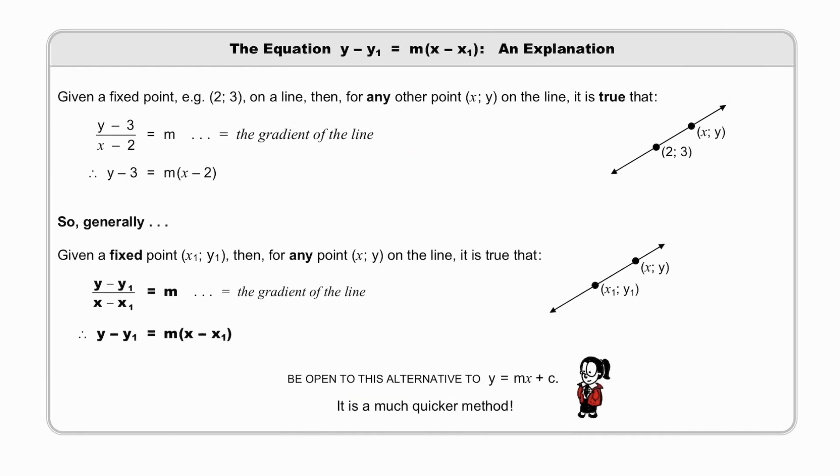Let's understand the form y minus y1 equal to mx minus x1. Given a fixed point, for example, 2, 3, on a line over there, then, for any other point, x, y on the line, it is true that y minus 3 over x minus 2 would be equal to the gradient of the line. Simply multiplying by x minus 2 gives us y minus 3 equal to m times x minus 2, which is actually this very equation. Then, if you know the gradient, you just can work out the equation by substituting for m.